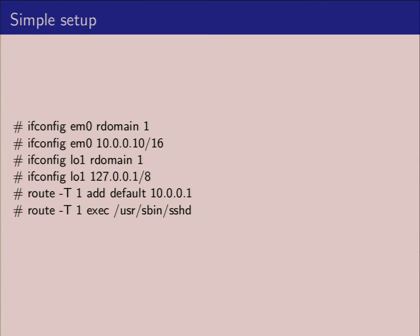It is generally recommended to create a localhost IP within the correct same routing domain. In this instance, you can see I have set up a default going to a gateway system 10.0.0.1. Then here I am executing the SSHD daemon, and it's being started in routing domain 1, defined here with dash capital T. What that allows you to do is start any arbitrary application within a specific routing domain. All incoming connections it can receive from that domain, and all outbound traffic is sent over that routing domain. This can be used to set up a management network that is not accessible from the regular part of your network.